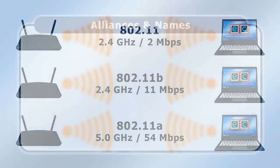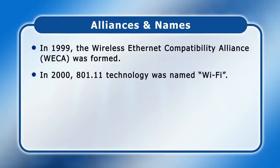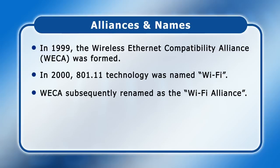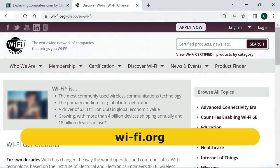Also in 1999, the Wireless Ethernet Compatibility Alliance, or WECA, was formed. A year later, 802.11 technology was given the name Wi-Fi, with WECA subsequently renamed as the Wi-Fi Alliance. This has a great website at wifi.org, although a form needs to be completed to access the most useful information.